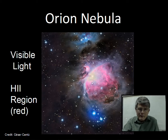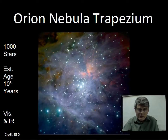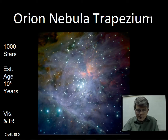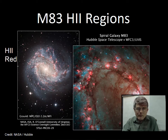The Orion Nebula is a gas cloud in the process of birthing stars. The hot stars are ionizing hydrogen; as the electron recombines with the proton, red light is emitted. Here we have visible and infrared photography overlaid — about a thousand stars in this region. We have the famous Trapezium, the brighter stars, and other stars in this molecular cloud. Estimates are that these stars are about a million years old, which is very young on the lifetime scale for stars.